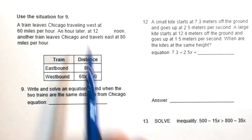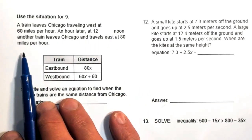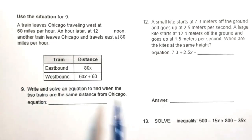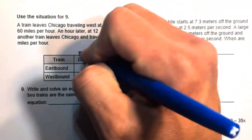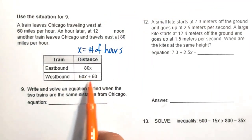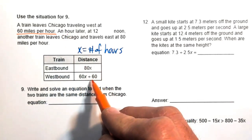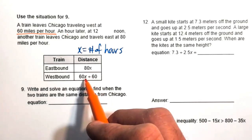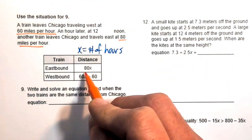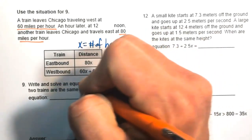Number nine: a train leaves Chicago traveling west at 60 miles per hour. An hour later, at noon, another train leaves Chicago traveling east at 80 miles per hour. Find when the two trains are the same distance from Chicago. They've given us both expressions: 80x and 60x plus 60. X is the number of hours. The 60x plus 60 accounts for the one-hour head start: one times 60 equals 60.